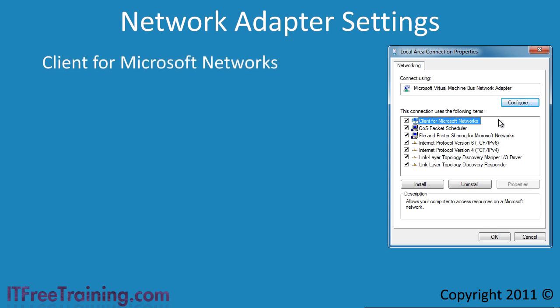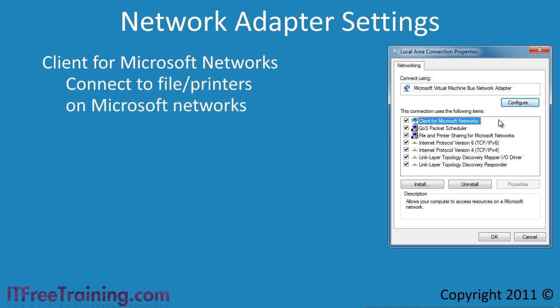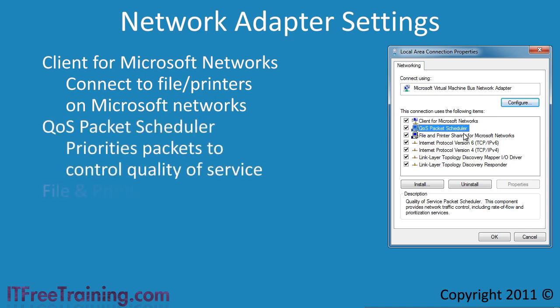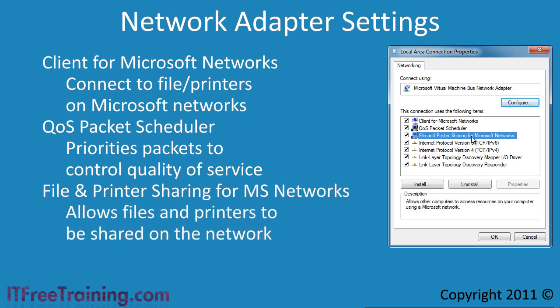The top one is the client for Microsoft networks, which allows the adapter to connect to network shares and access other Microsoft services such as network neighborhood. Third party clients could also be added here. Those listed next are the quality of service packet scheduler and file and printer sharing for Microsoft networks. The QoS service attempts to manage your bandwidth more effectively so that time-critical services are not affected while large downloads are happening at the same time. File and printer sharing allows your files and printers to be shared on the network.